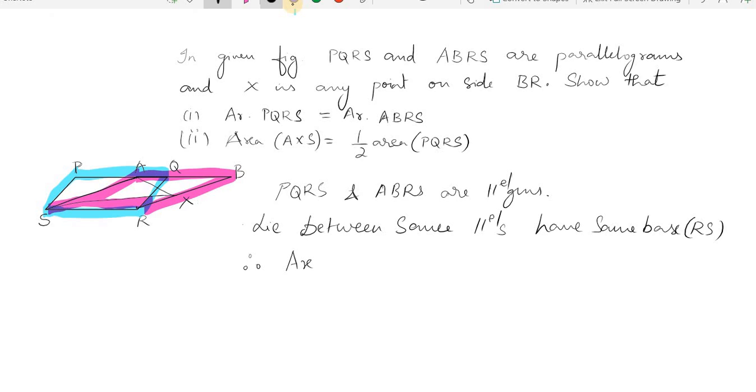Now coming to the second part, what we see is that area of AXS is equal to half area of PQRS. So in this section, the AXS is here, it is inside the parallelogram ABRS.